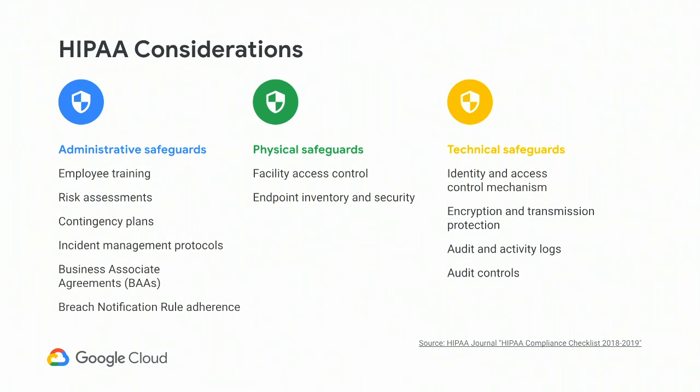HIPAA is broken into three sections of requirements. We have administrative safeguards, which is basically how you run your business, how you hire people, how you give them access to systems, what they do with those systems, whether you plan for disaster events. Then we have physical safeguards — when do you let people into your buildings, where do you store your IT systems, who gets access to your IT systems, what sort of processes are in place before you give a vendor access to your server closet?